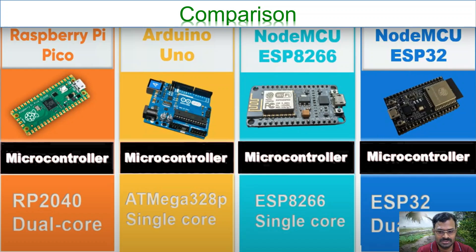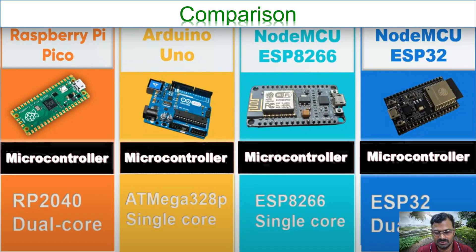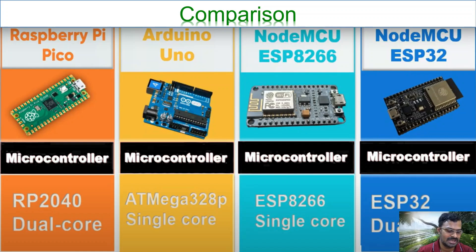The microcontrollers used in these boards are different. The Raspberry Pi Pico uses the RP2040 dual-core, Arduino Uno uses a single-core ATmega328P, NodeMCU ESP8266 is also single-core, and ESP32 is a dual-core processor. Since Raspberry Pi Pico and ESP32 both have dual-core processors, they can perform tasks faster and handle more data.